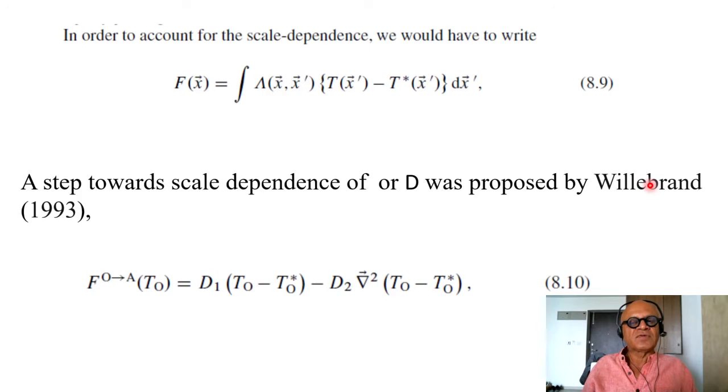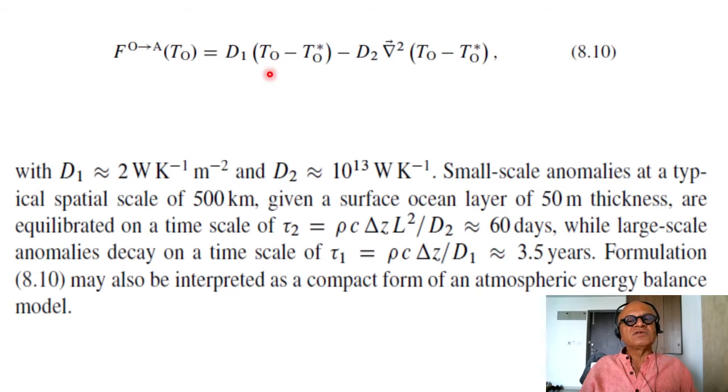So Willebrand then provided a parameterization for the spatial dependence of the restoration. A step towards scale dependence of lambda or D was proposed by Willebrand in 1993. So F ocean to atmosphere at T ocean depends then on D1 times T_O minus T_O star minus D2 times del square grad square T_O minus T_O star. So you have added a dependence here on space. You write this as D1 estimated to be 2 watts per kelvin per meter squared and D2 approximately 10 to the 13 watts per kelvin.